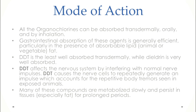Some pesticides are absorbed well transdermally while others are not. For example, DDT is least absorbed transdermally through the skin, whereas dieldrin is very well absorbed through the transdermal route. DDT affects the nervous system by interfering with normal nerve impulses — it causes nerve cells to repeatedly generate impulses, which leads to tremors in animals or humans exposed to DDT.